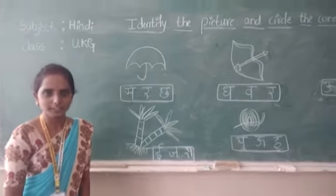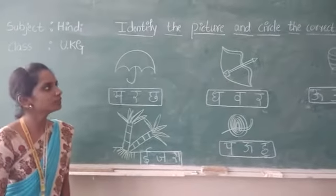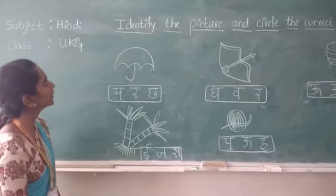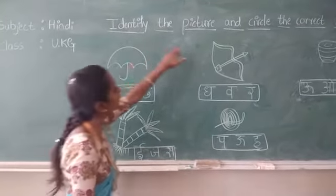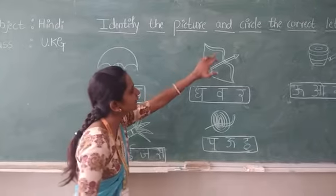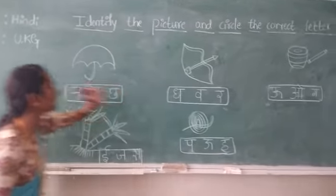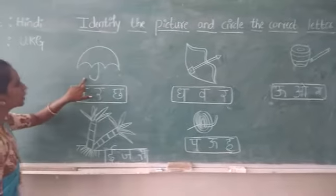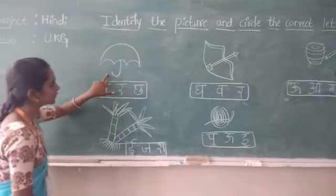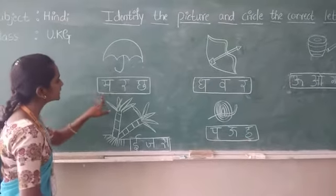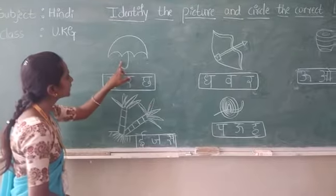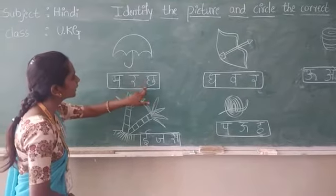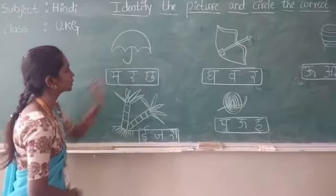Good morning children. In today's video class, what we are going to learn is we have to identify the picture and circle the correct letter. We have to observe the picture first and see the letters below and circle the correct letter of that picture.